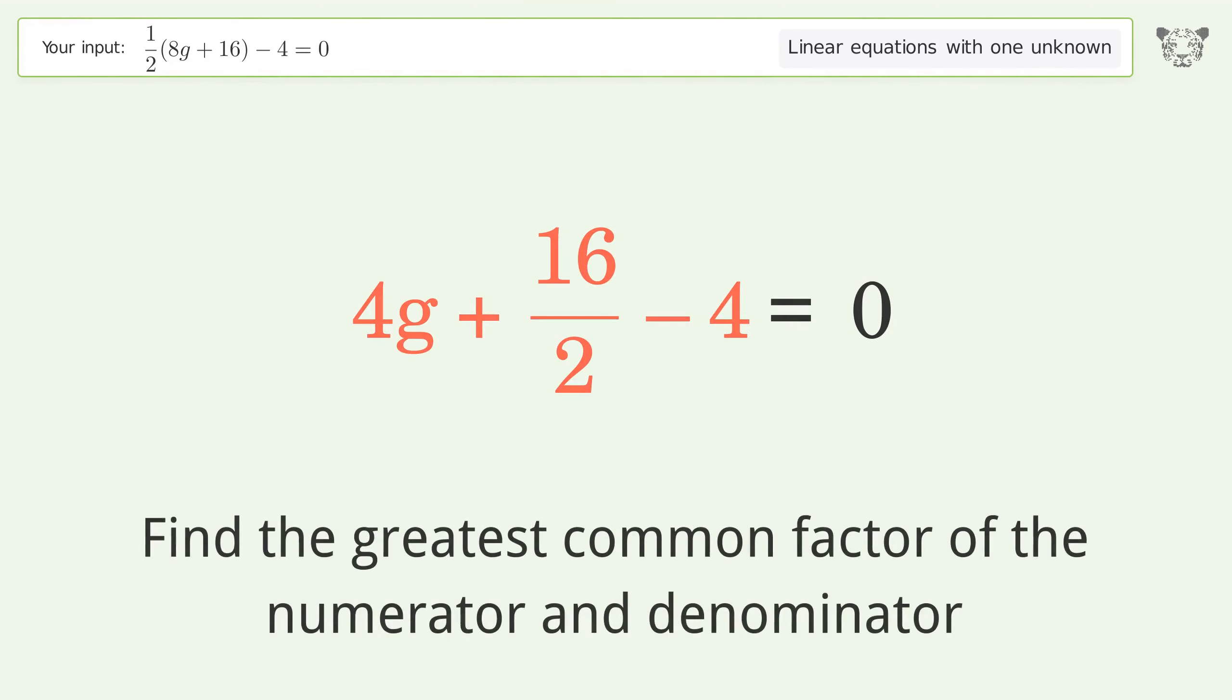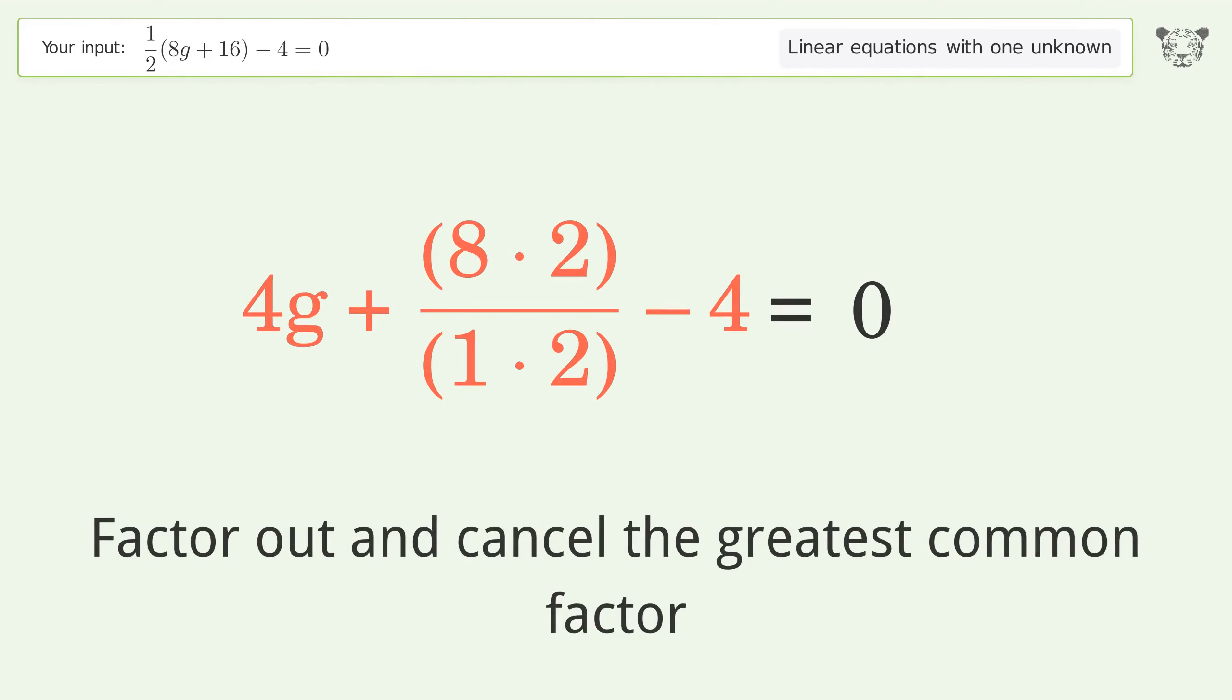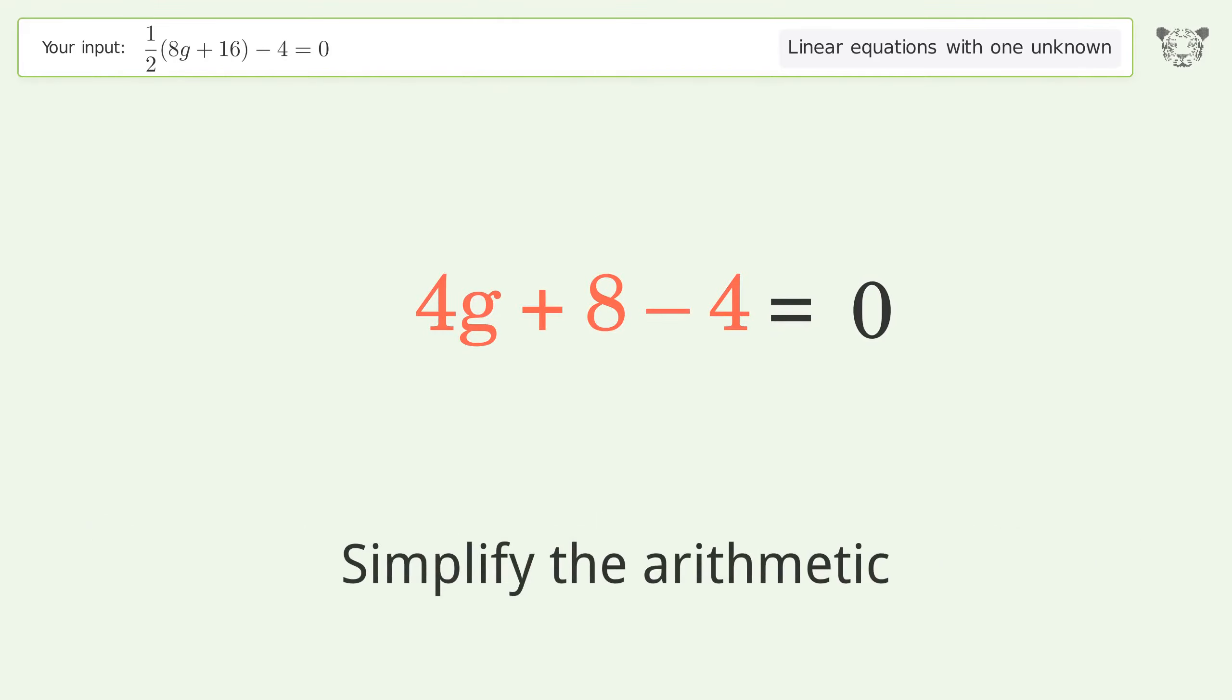Find the greatest common factor of the numerator and denominator. Factor out and cancel the greatest common factor. Simplify the arithmetic.